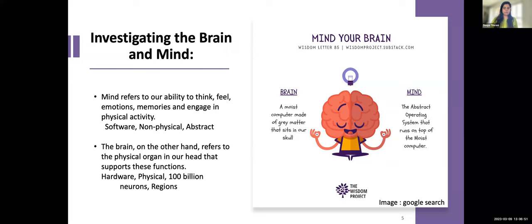There is an important difference between the mind and the brain, though these terms are often used interchangeably. The mind is the ability to think, feel, experience emotions, and remember things — it's an abstract concept often described as software running on the brain's hardware. The brain is a physical organ inside our head that supports these mental functions, and is made up of millions of neurons.